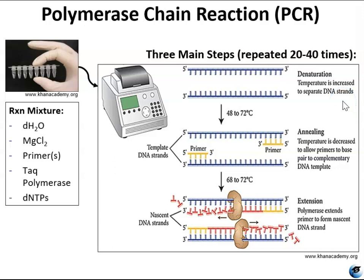The first step: the double-stranded template DNA containing the target sequences is denatured at approximately 94 degrees. The high temperature required to physically separate the DNA strands is the reason that heat-stable Taq polymerase is required. Then the temperature is lowered to approximately 48 degrees — it's really a range depending on your primers, usually between 45 and 65 degrees — and this allows the DNA primers complementary to the ends of the target sequence to anneal, meaning they stick to the template strands, with one primer annealing to each strand.